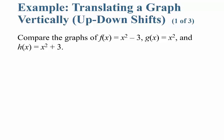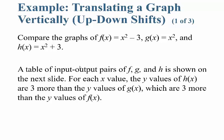Let's compare the graphs of: f of x equals x squared minus 3, g of x equals x squared, and h of x equals x squared plus 3. Notice the difference — we have x squared, and then we're either subtracting 3 or adding 3. If you do a table of input-output pairs, they're shown on the next slide.